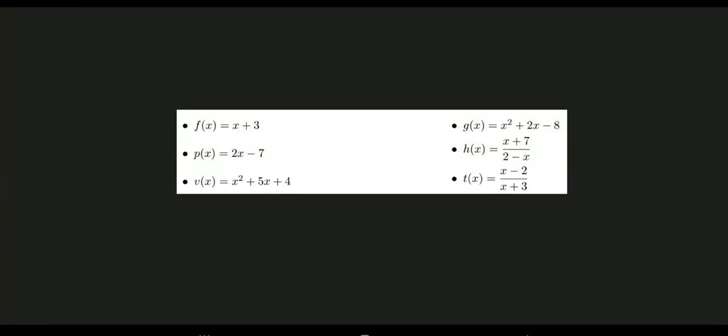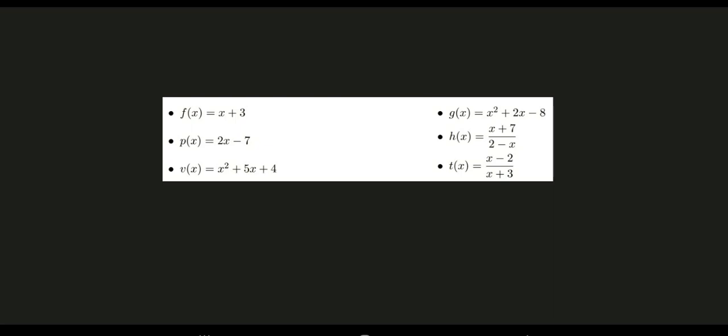Hi, good day everyone. This video is about operations on functions. I have a different set of functions: f of x as x plus 3, p of x as 2x minus 7, v of x as x squared plus 5x plus 4, g of x as x squared plus 2x minus 8, h of x as x plus 7 over 2 minus x, and t of x as x minus 2 over x plus 3.